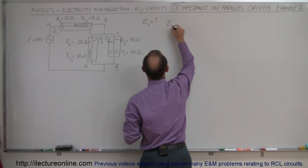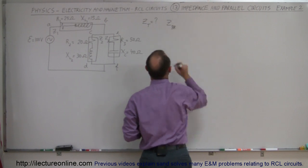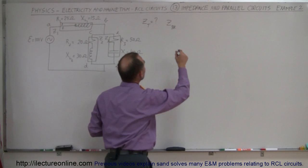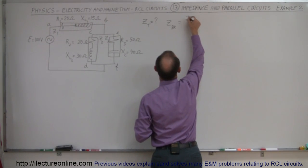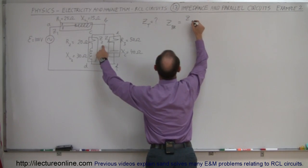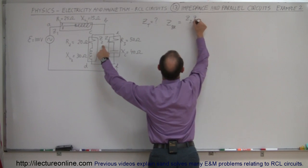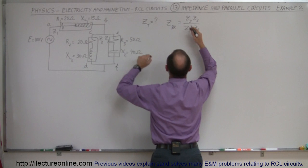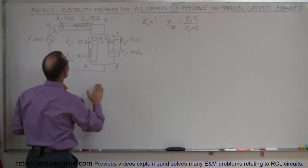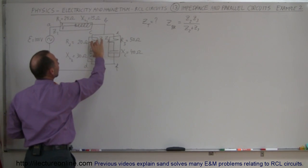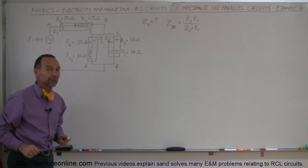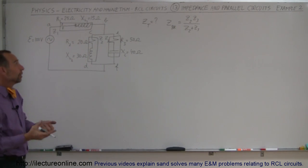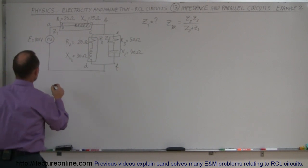The impedance of the branch — I'll call it Z sub Br for branch. Since it's a parallel branch, that would be equal to Z2 times Z3 divided by Z2 plus Z3. We use the product over the sum method. Notice I labeled this as Z1, this as Z2, and this as Z3. To find a solution to that, I need to know what Z2 and Z3 are.